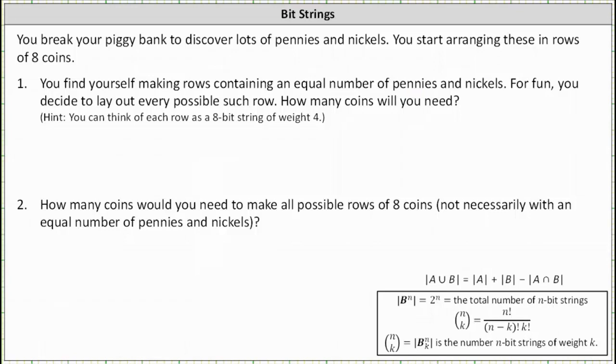So if we laid out four pennies and four nickels, we would have the eight-bit string of zero, zero, zero, zero, one, one, one, one. Notice how this is an eight-bit string with a weight of four because there are four ones.